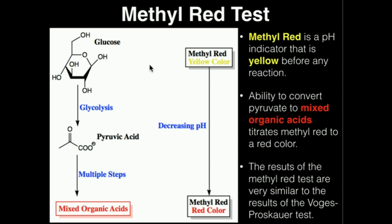I have this little diagram here. We're going to start with glucose. Glucose will go through glycolysis to form pyruvic acid or pyruvate. And then the pyruvic acid could, if the bacteria is able to do this, convert this to mixed organic acids.